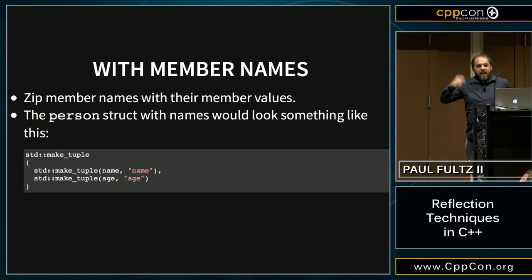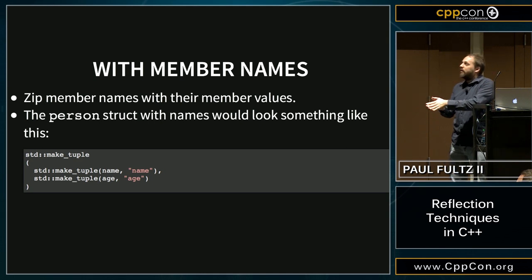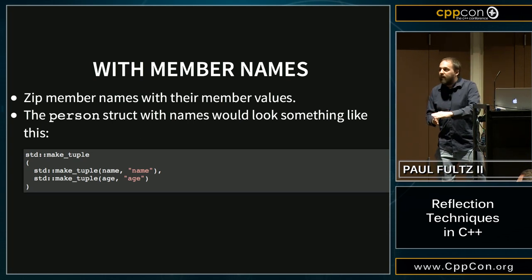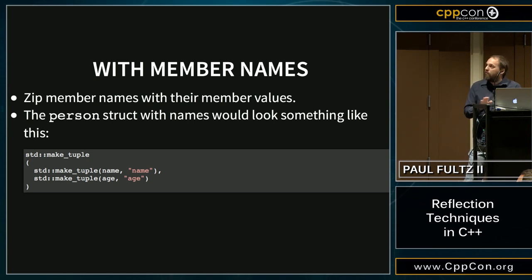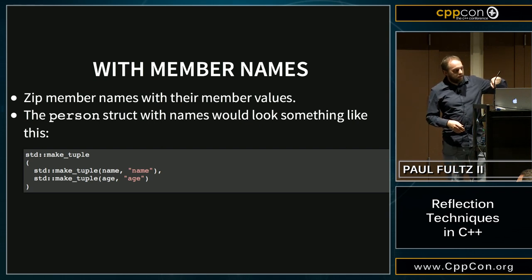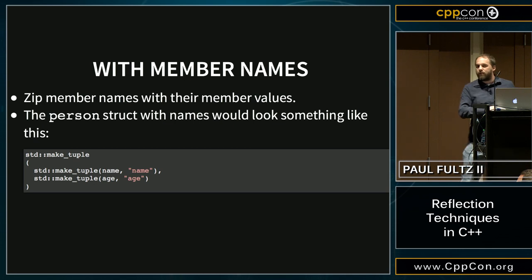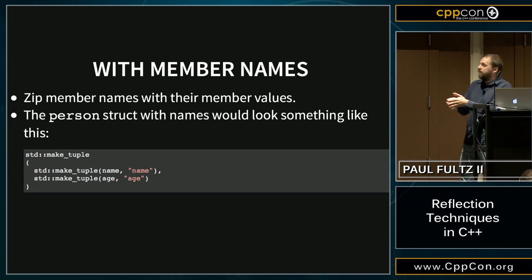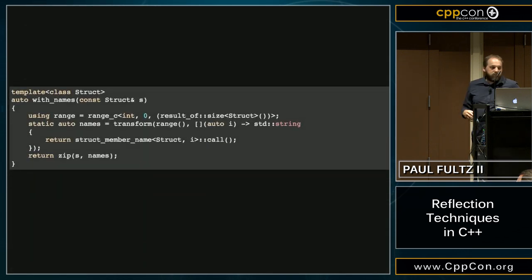When iterating using for_each, we want to have both the name and the value corresponding together. So we want to zip those names together with their values. Conceptually, you're going to have a tuple containing another tuple that holds the value and the name. To do this, we create a withNames function that zips these things together.